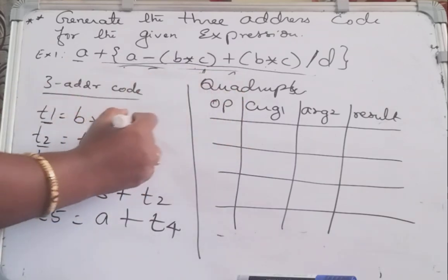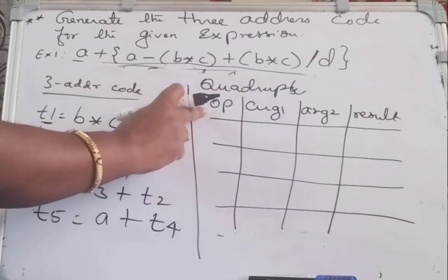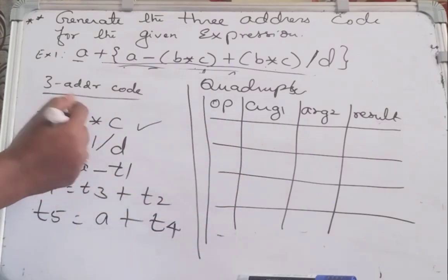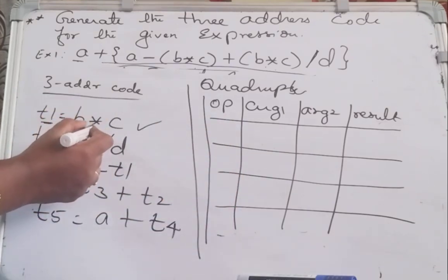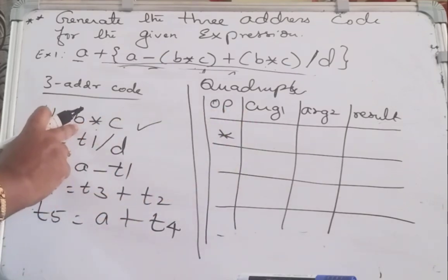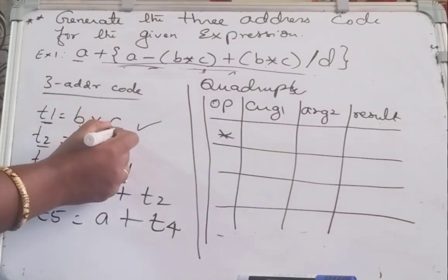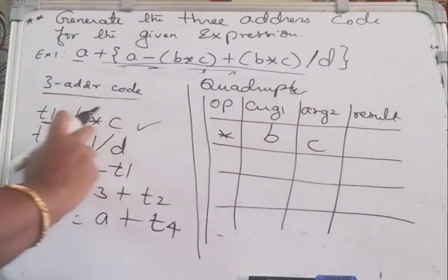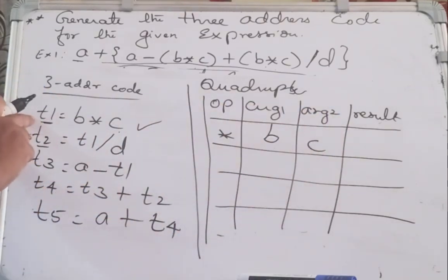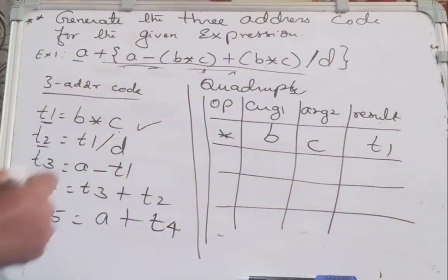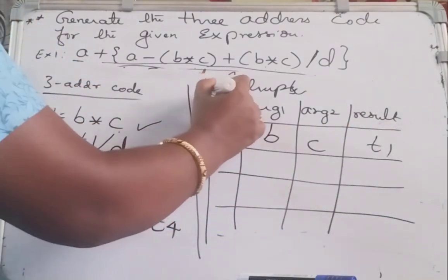Now see the first instruction. The first column is the operator — what is the operator we used? Star. So put star there. The operands are argument one and argument two: that is B and C. And what is the result? T1 — the left-hand side. T1 is the result. Fill the quadruple table like this.